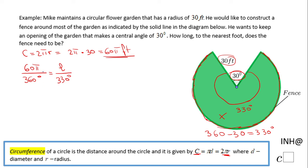All right, and I'm gonna have 360 times L equals 60π times 330. For finding L, I'm gonna have to divide by 360.